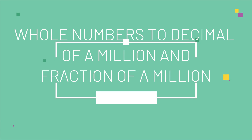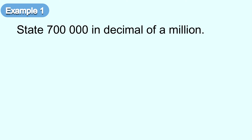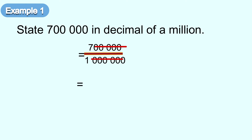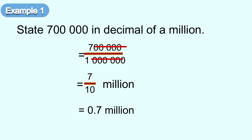Now let's see how to convert whole number to decimal of a million and fraction of a million. Example one: state 700,000 in decimal of a million. To convert to decimal of a million, we need to divide by 1 million. So, 700,000 divide by 1 million. Cancel the zeros — you will have 7 over 10 million. Since 7 over 10 equals 0.7, the answer is 0.7 million.